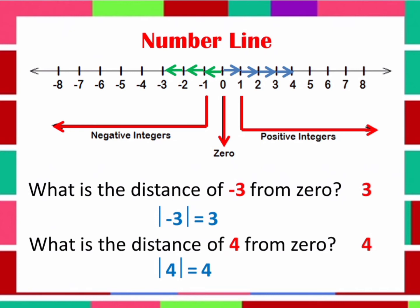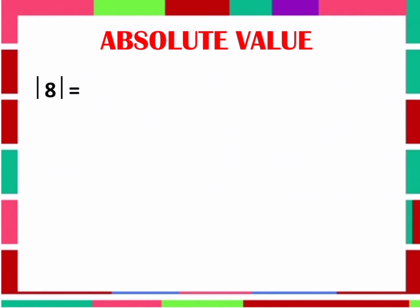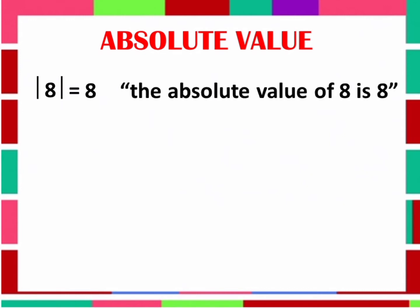What have you observed from the given examples? Remember that if you are going to get the Absolute Value of a number, it will never be negative because we are just getting the distance of that number from 0. For example, what is the Absolute Value of 8? The answer is 8. It is read as the Absolute Value of 8 is equal to 8.